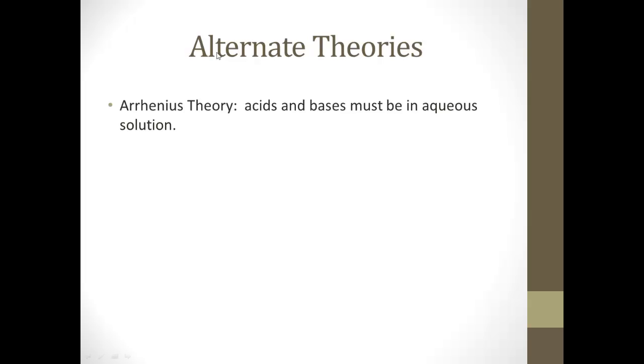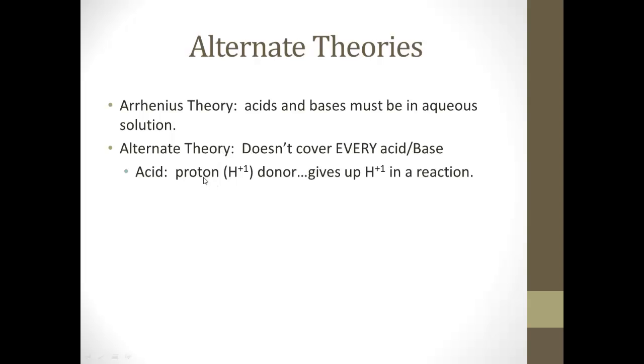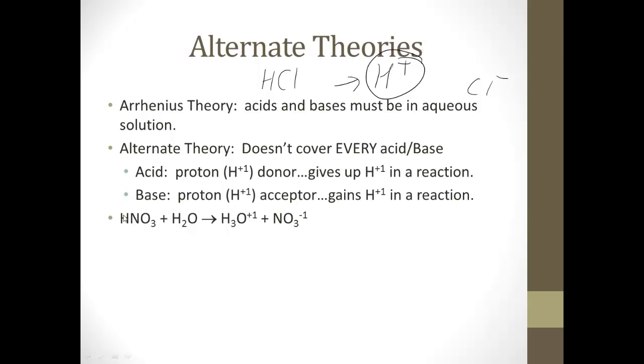So far, we were talking about the Arrhenius theory of acids, which always, for it to be valid, the acids and bases must be in an aqueous solution, because without water, they're not really going to do much anyway. Another theory that doesn't cover every acid and base, like the first one I learned when I was in chemistry was called the Bronsted-Lowry theory. And for that, an acid was defined as a proton donor, meaning it gives up a proton in a reaction. H plus is a proton, right? So, HCl gives up an H plus and a Cl minus is left behind. So, it was a proton donor. So, it was an acid.